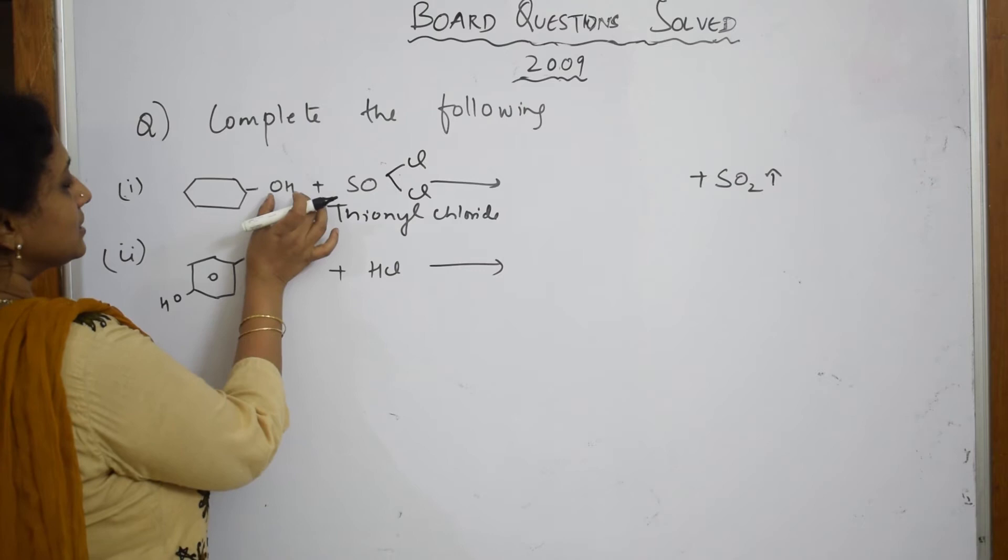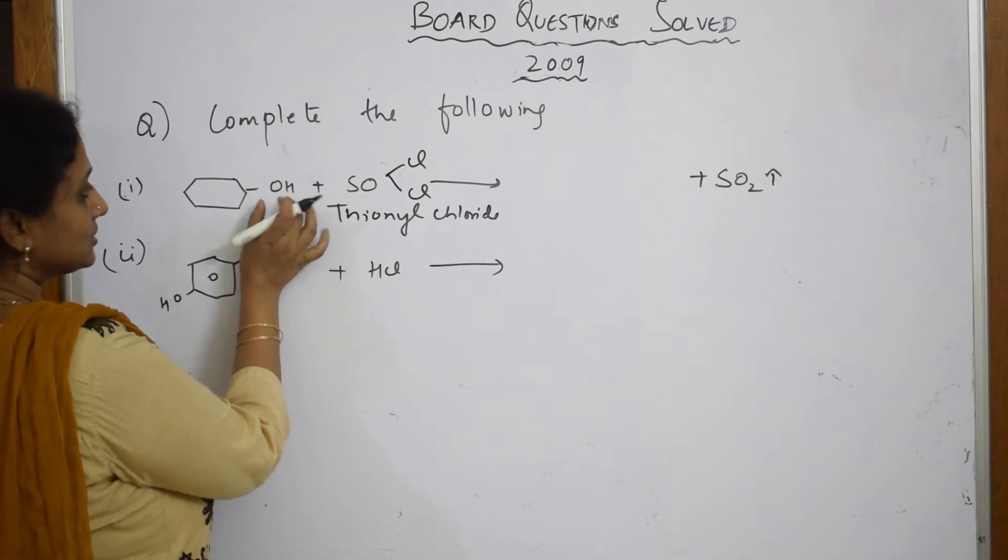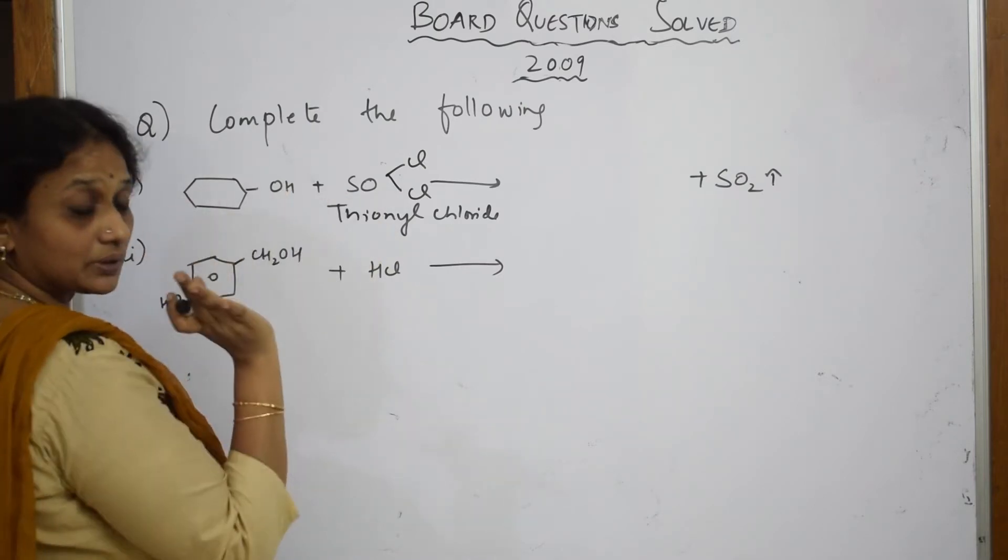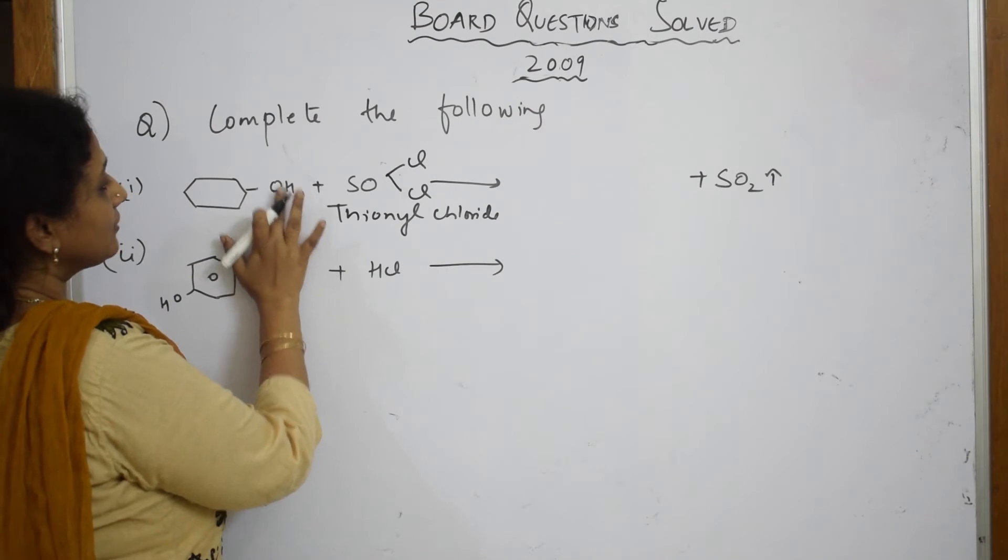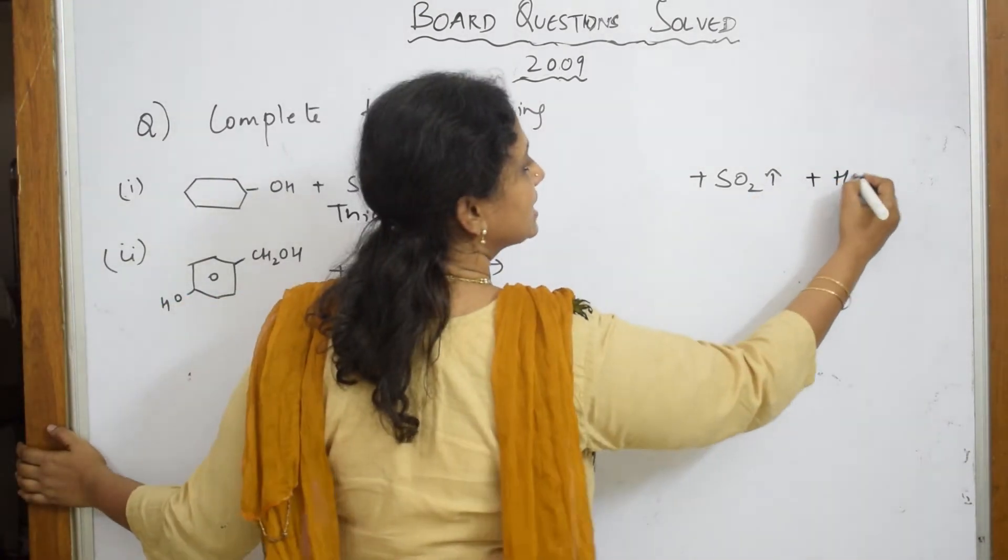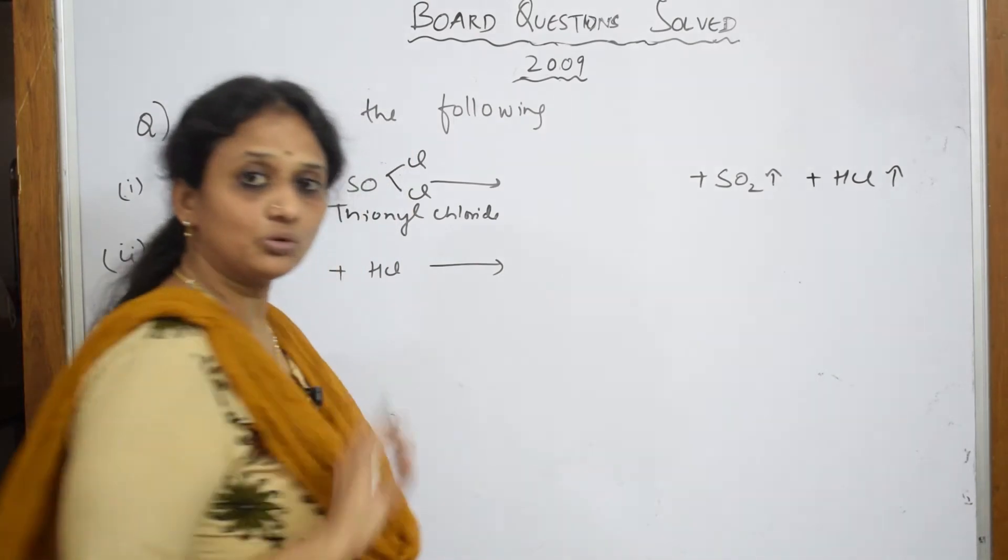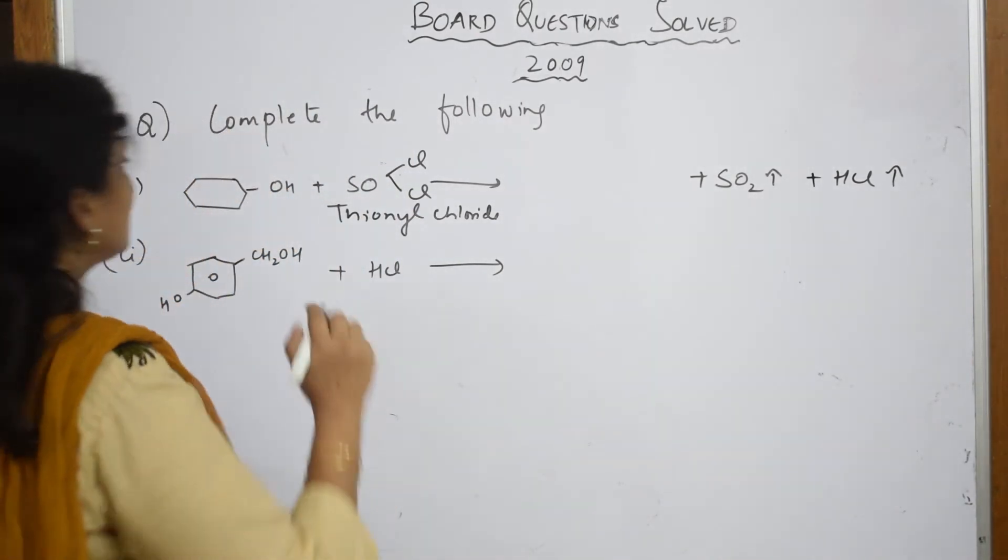Now this particular OH, so SO₂ has come out, done. So what else do you have? Your H and Cl comes out as HCl vapors. Remember, both are in vapor state.